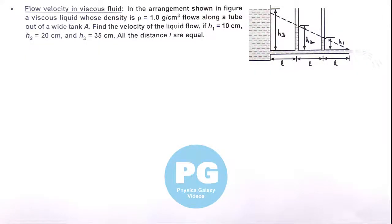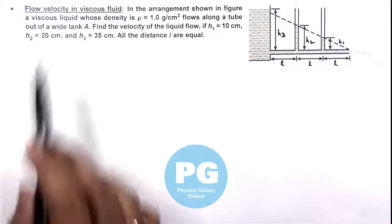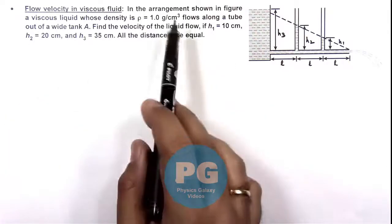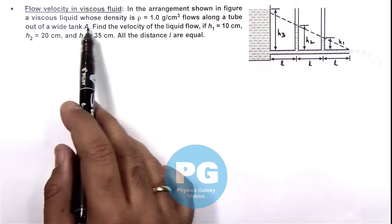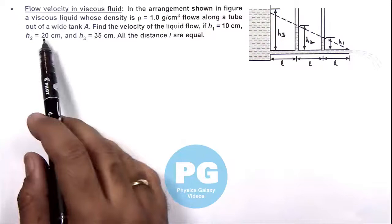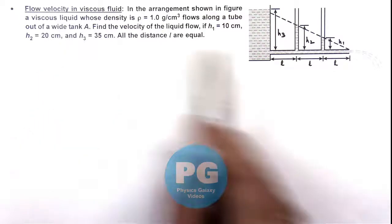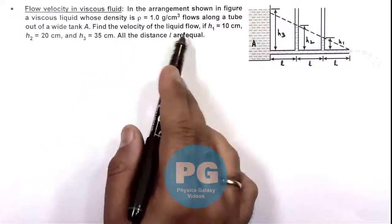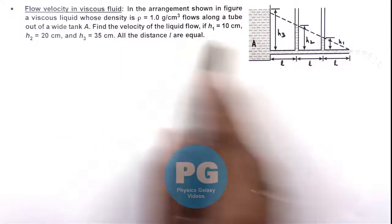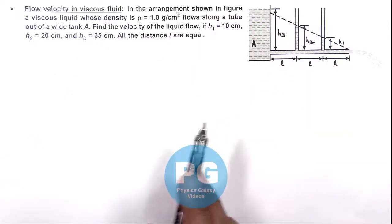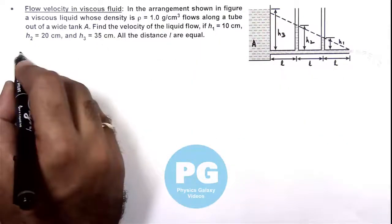In this illustration we are going to discuss about flow velocity in viscous fluid. Here we are given that in the arrangement shown in figure, a viscous fluid whose density is ρ flows along a tube out of a wide tank A. Find the velocity of this liquid flow if h1, h2, h3 are given as 10, 20, and 35 centimeter. All the distances l are equal.